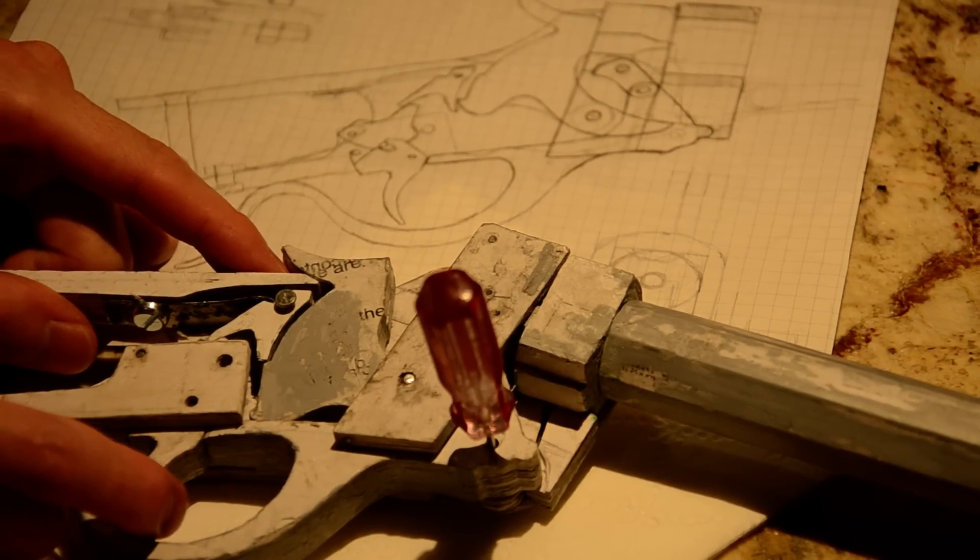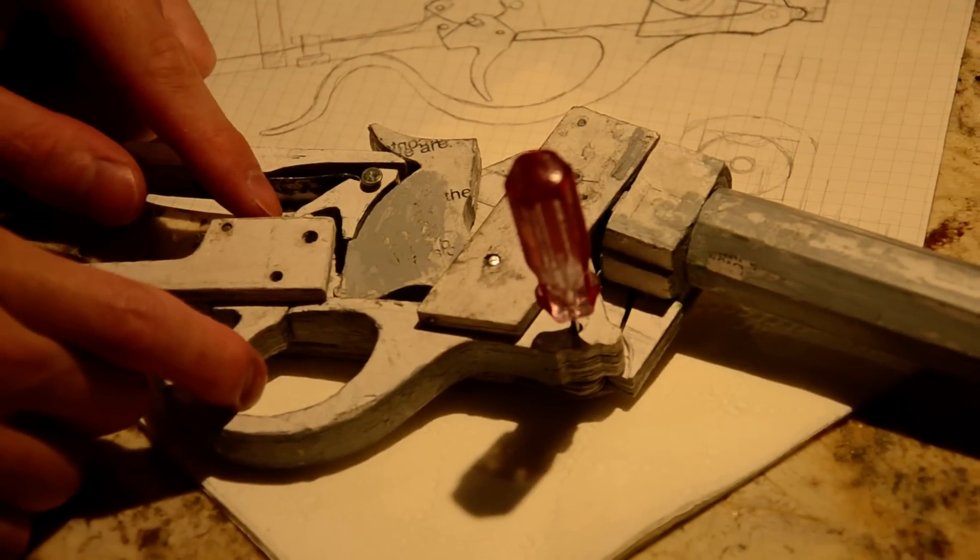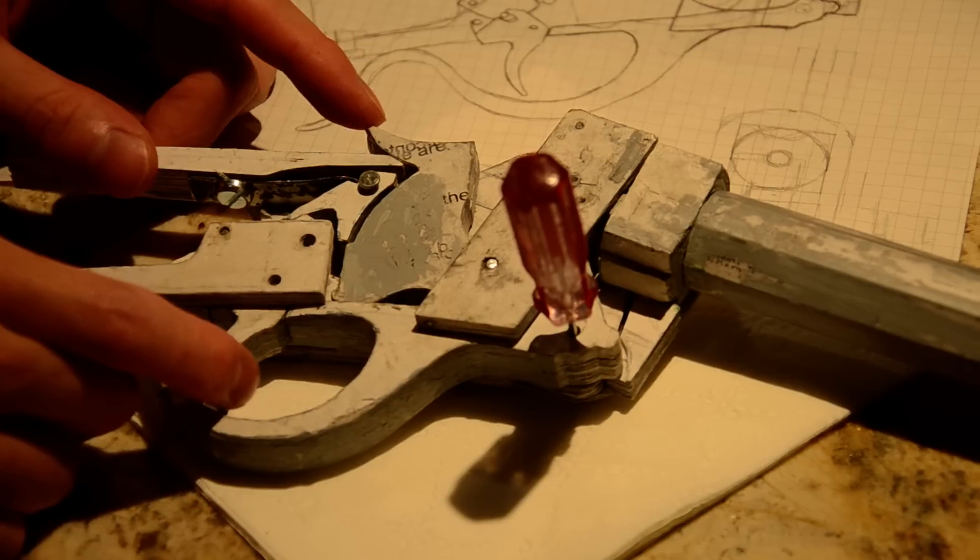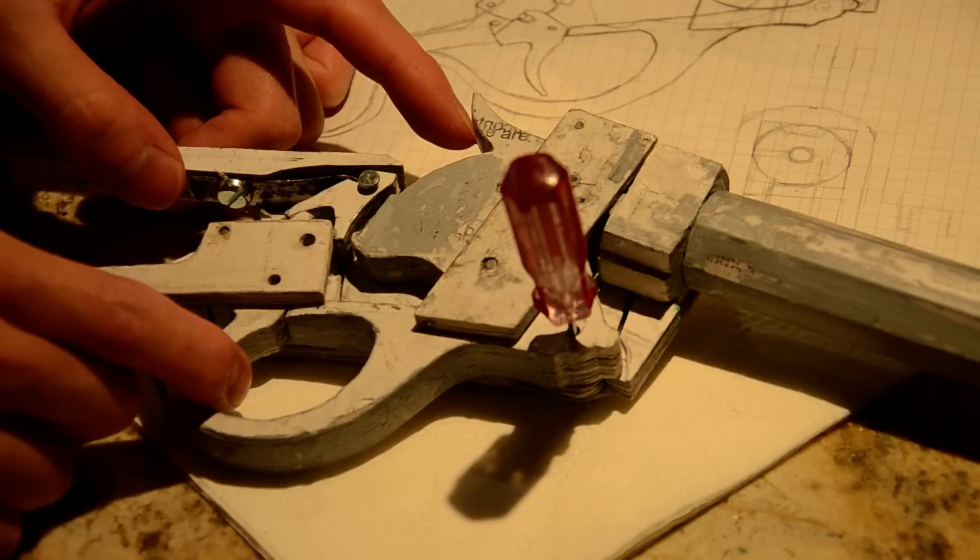And when you pull the trigger, this raises the front portion of the actuator, which tilts the sear back. And that will free the hammer to fall.